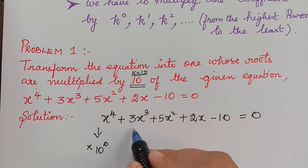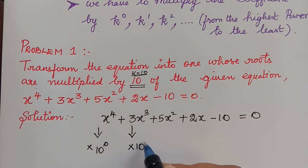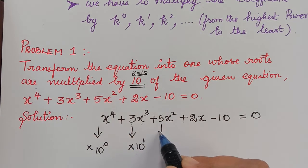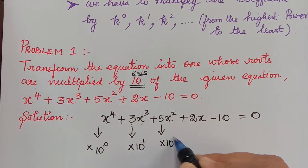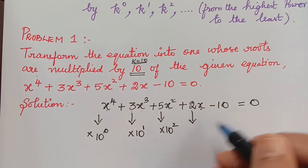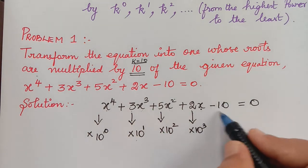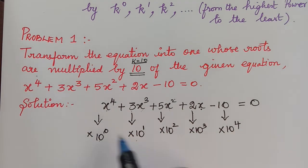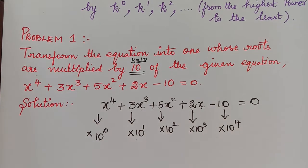The coefficient of the next term is 3, which has to be multiplied by 10 power 1. The coefficient of x squared is 5, multiplied by 10 squared. The coefficient of the next term is 2, multiplied by 10 cube. And the constant term has to be multiplied by 10 power 4. So the pattern is k power 0, k power 1, k squared, k cube, k power 4.